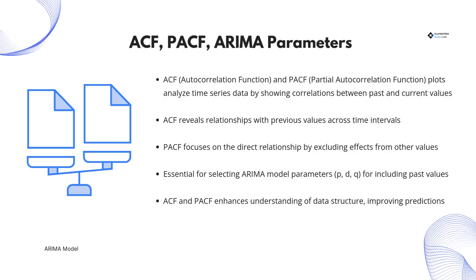To fine-tune an ARIMA model, we use the autocorrelation function, ACF, and partial autocorrelation function, PACF, plots. These tools help analyze the relationships between past and present values in a time series. ACF measures how strongly previous values are correlated with the current value over different time intervals. PACF, on the other hand, isolates the direct impact of past values by removing indirect effects. These plots are essential for selecting the right ARIMA parameters — p, d, and q — which determine how many past values, differencing steps, and past errors should be included in the model.